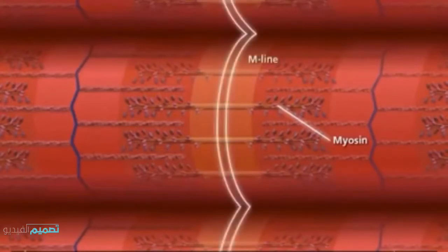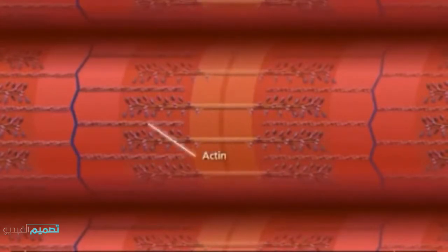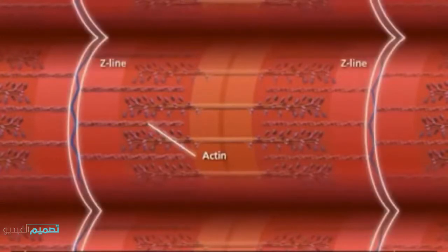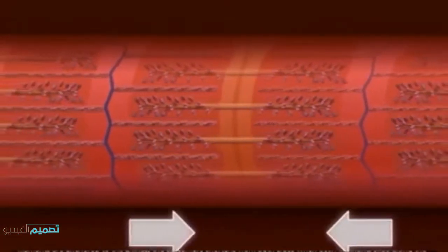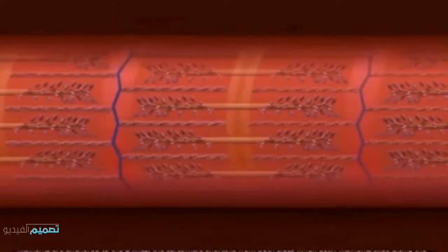The thick filaments are myosin, which are anchored at the center of the sarcomere called the M-line. The thin filaments are composed of the protein actin, which are anchored to the Z-lines on the outer edges of the sarcomere. Because the actin filaments are anchored to the Z-lines, the sarcomere shortens from both sides when actin filaments slide along the myosin filaments.